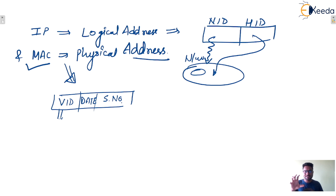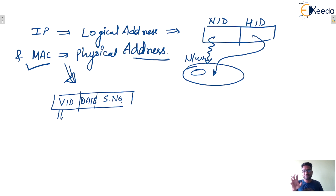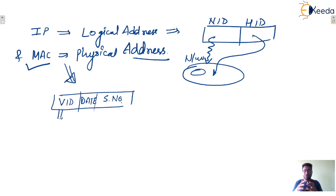Whenever you buy any system, inside that system one NIC card — Network Interface Card — is present, and the MAC address is hard-coded or written on it by the manufacturing company. Different manufacturing companies may have different patterns of MAC address.